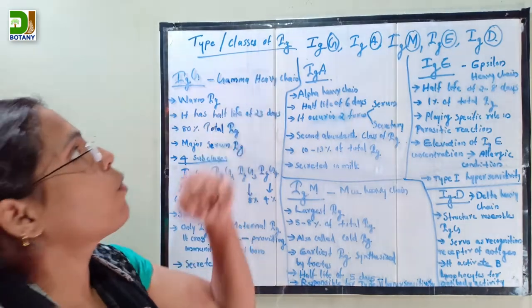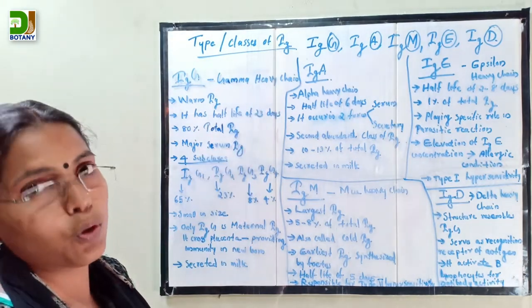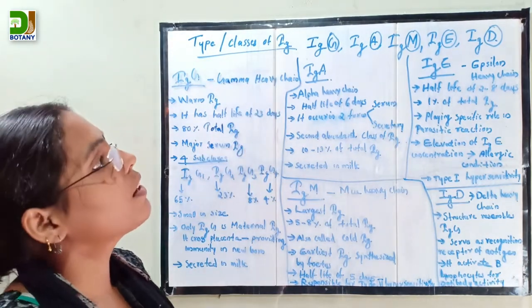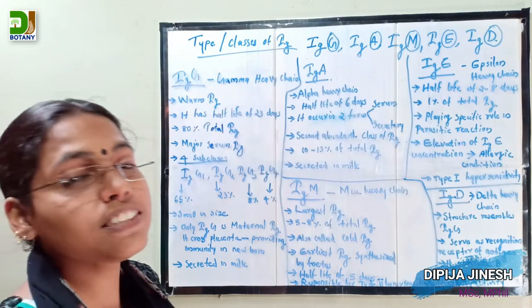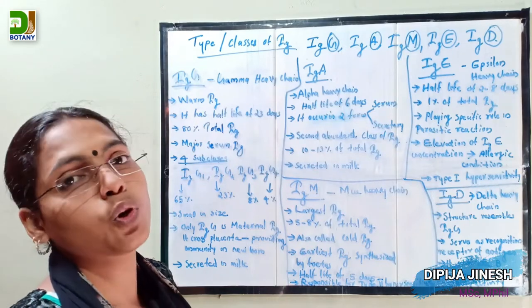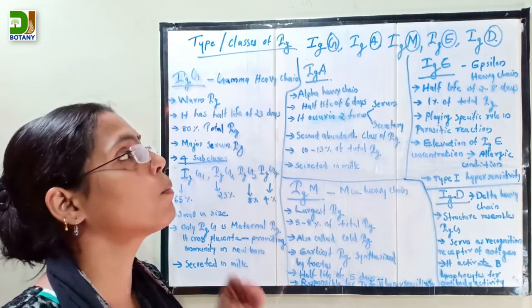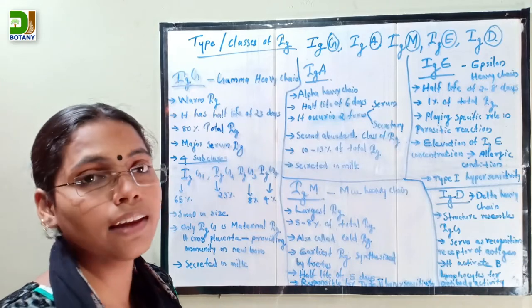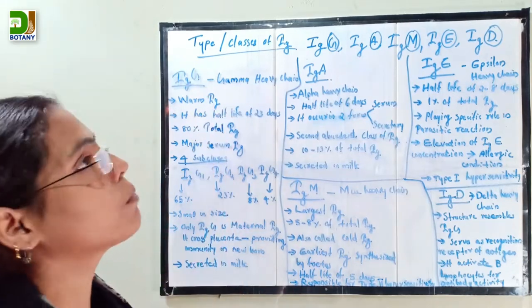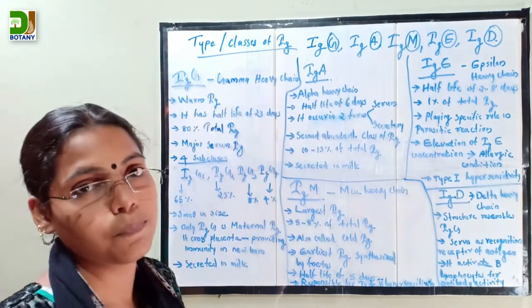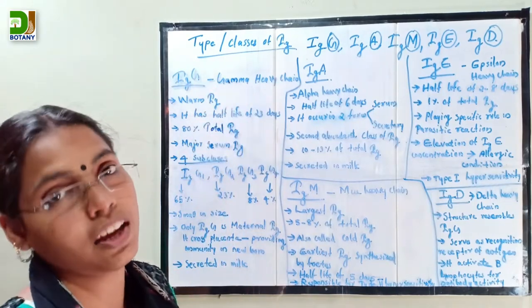Next we discuss the different classes of immunoglobulin. There are five classes: immunoglobulin G, immunoglobulin A, immunoglobulin M, immunoglobulin E, and immunoglobulin D.